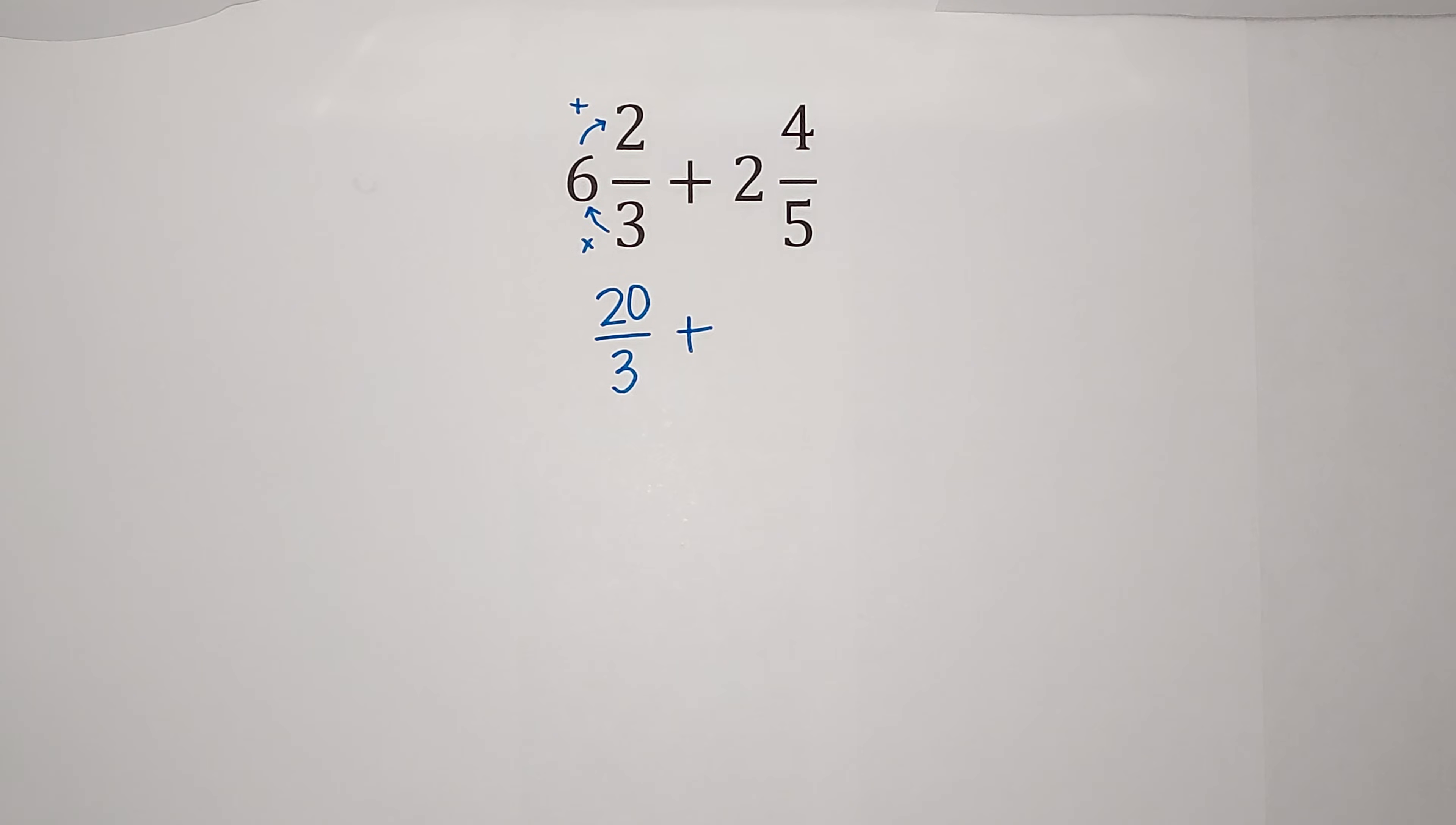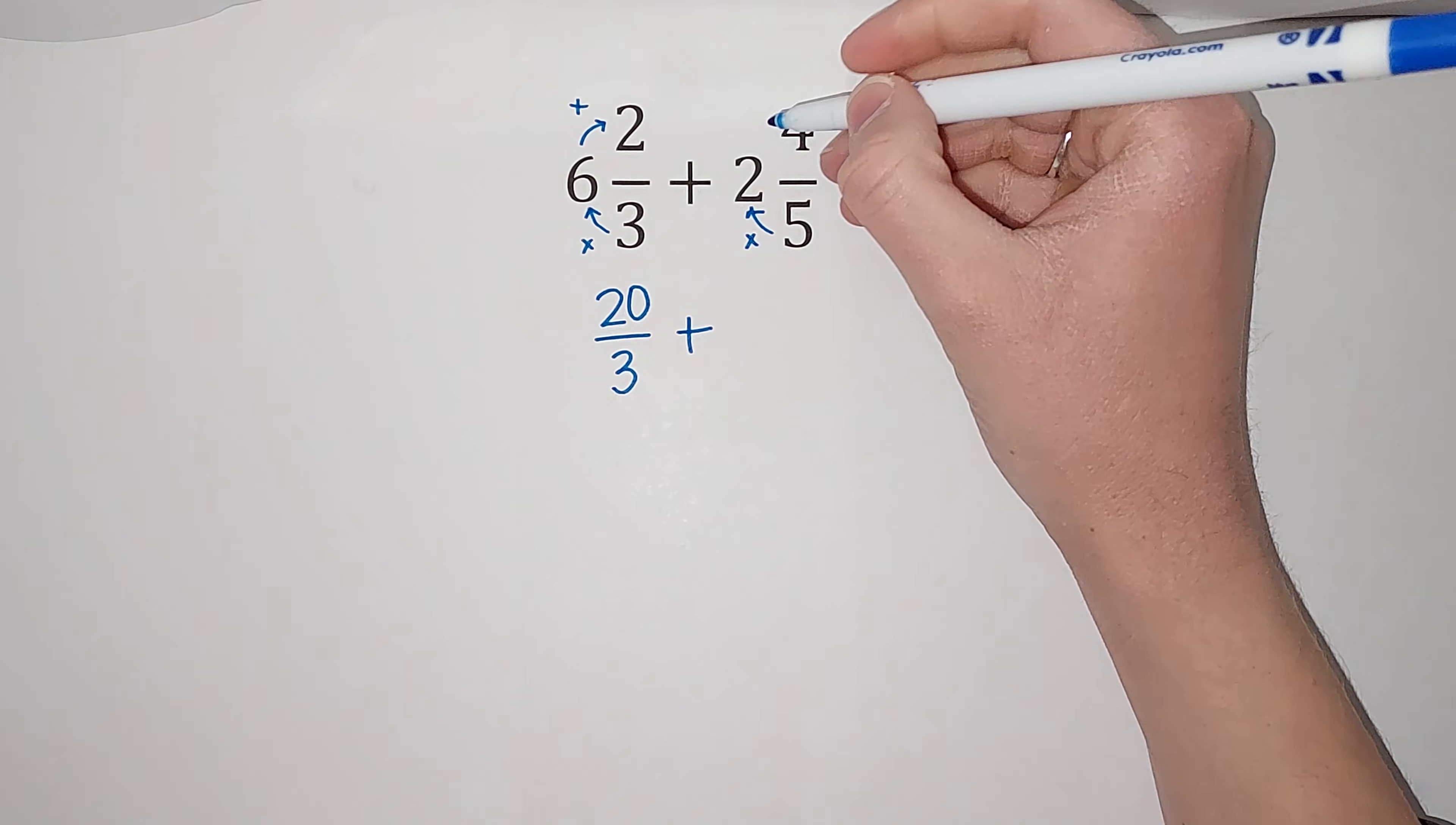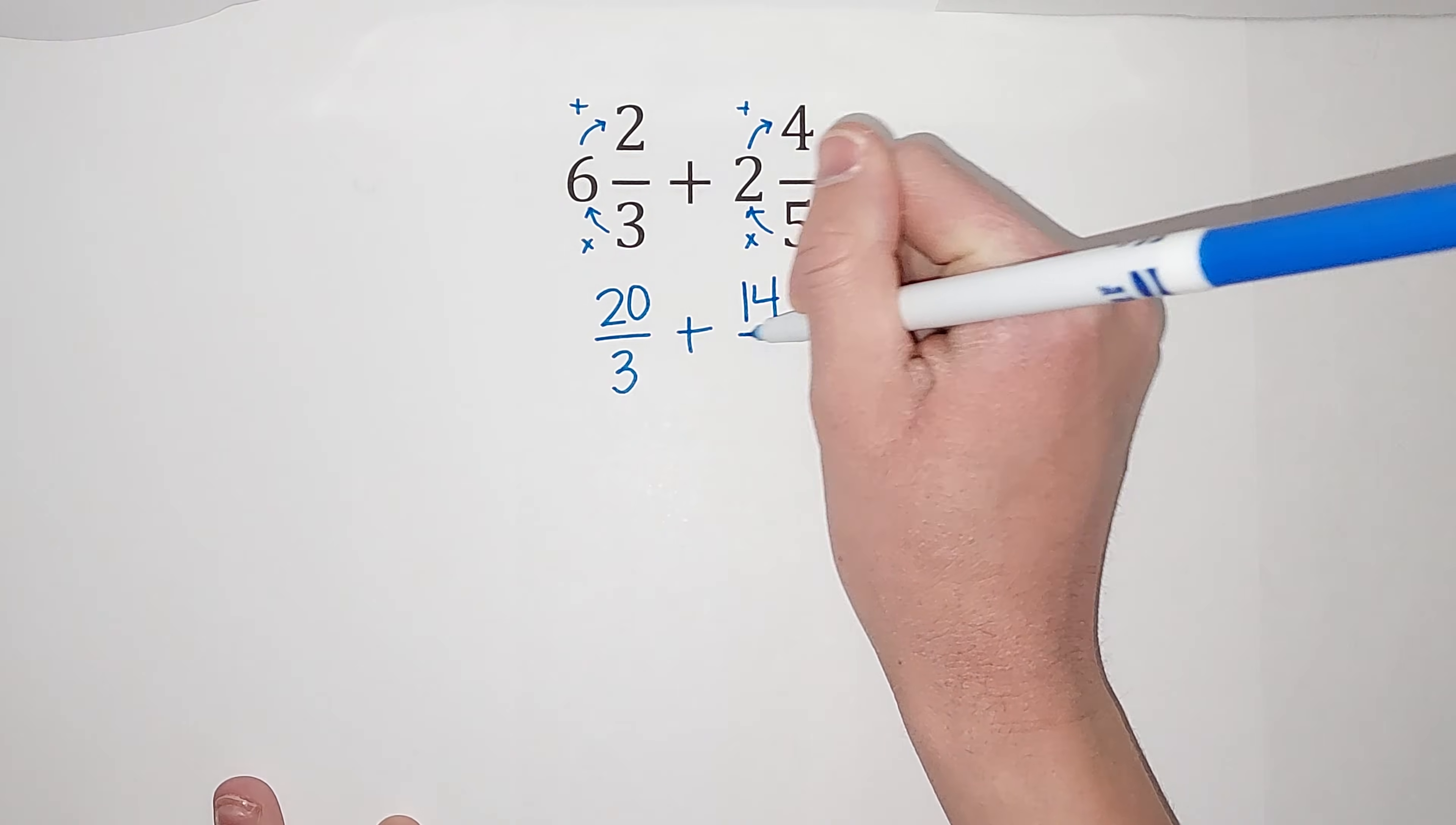And we're adding 2 4/5, but I want to get this to be an improper fraction as well. So we're going to take five and multiply it by two, which is 10, and then add four. So 14. So then we have 14 fifths.